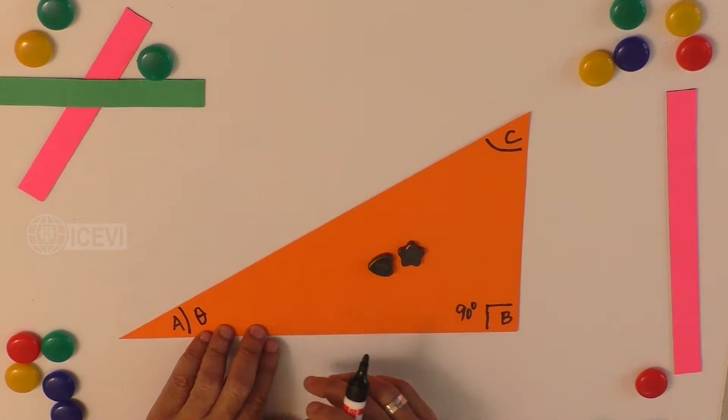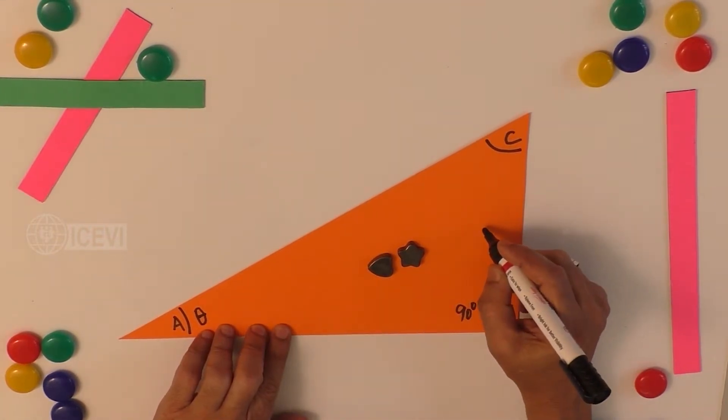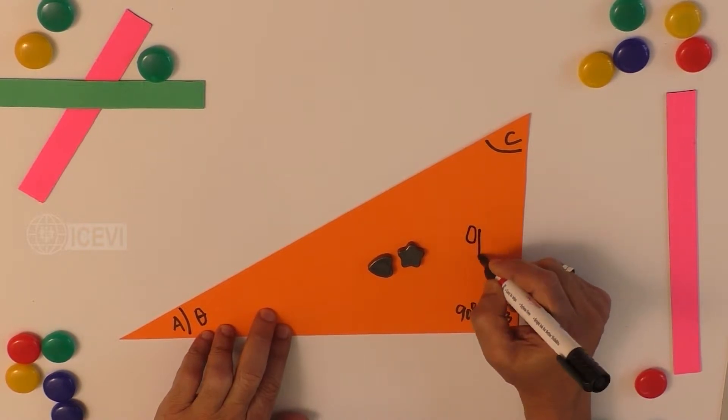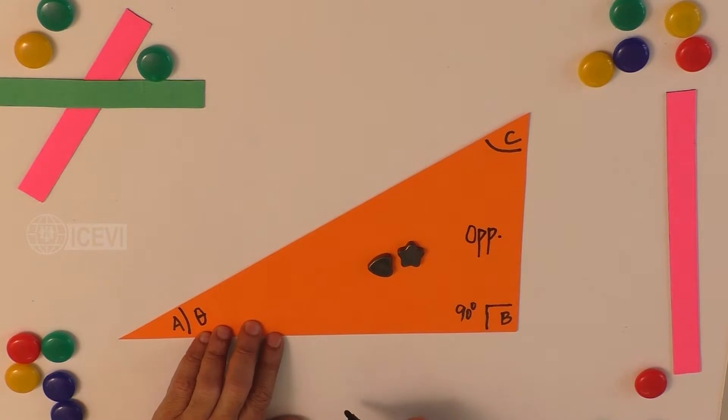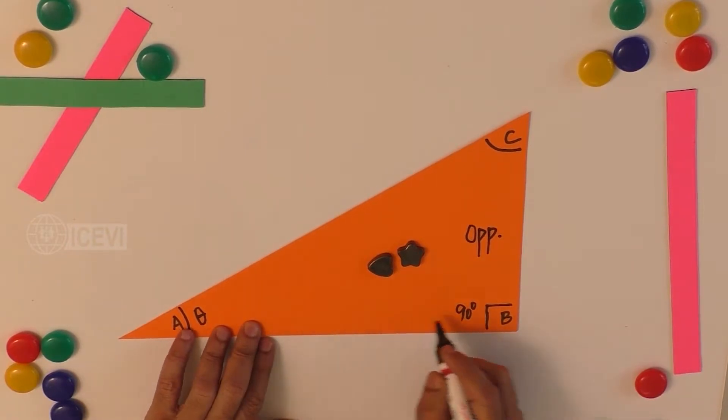Now, how is sine theta defined? Side BC is the opposite side, side AB